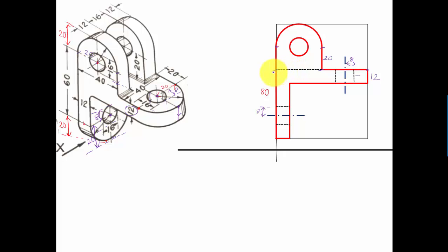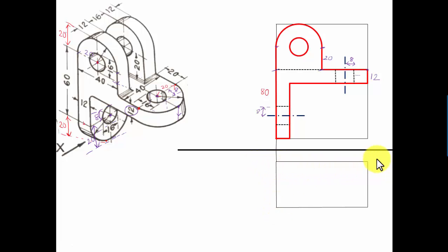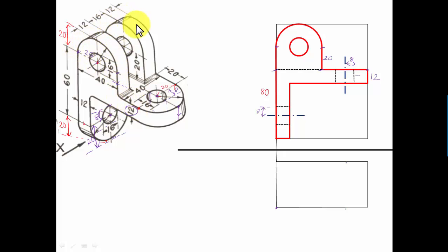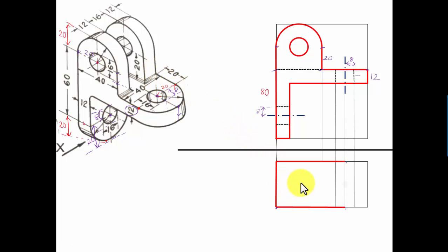Now let's make the top view. This object has a width of 80 millimeters. For the length seen from the top: 12 plus 16 is 28, plus 12 is 40. So I'm going to make a rectangle of 40 by 80. Starting from the corresponding point, we draw a semicircle, then a center line until we reach the center point approximately. When looking from the top, this portion will look as a straight line and this portion also will look as a straight line.